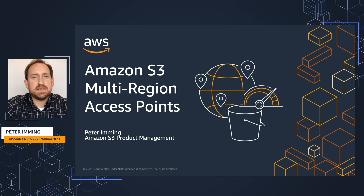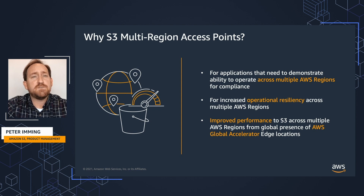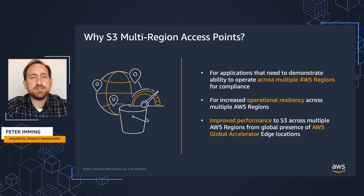So why did we build Amazon S3 multi-region access points? It's really for operating and connecting applications across multiple AWS regions to multiple S3 buckets. Traditionally, Amazon S3 has been very regional based — you connect to a specific bucket in a specific region with your application. And if you ever needed to change that, that was a manual change to your application.